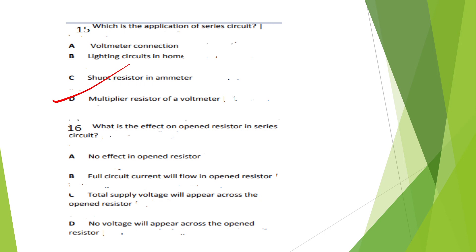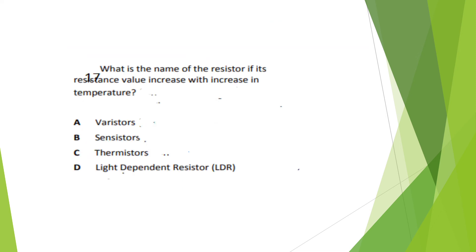Question 15: What is the effect on an open resistor in a series circuit? The total supply voltage will appear across the open resistor. The answer is Option D.